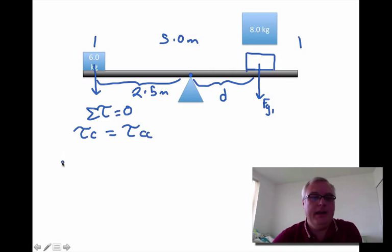In the clockwise direction I have Fg1 times d, which is equal to the torque in the counterclockwise direction, which is going to be Fg2 times the length of this object over to the length of the seesaw. So this is Fg2.